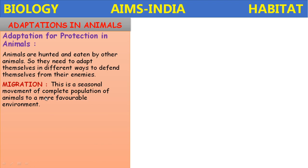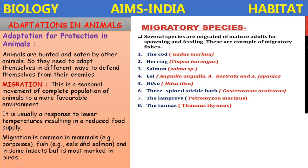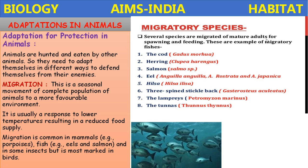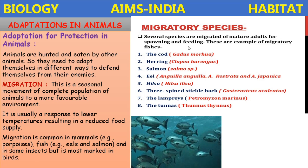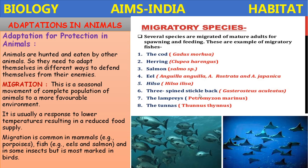Migration is a seasonal movement of a complete population of animals to a more favorable environment. It is usually a response to lower temperatures resulting in a reduced food supply. Migration is common in mammals, fish, and some insects, but is more marked in birds. Several species migrate as mature adults for spawning and feeding.